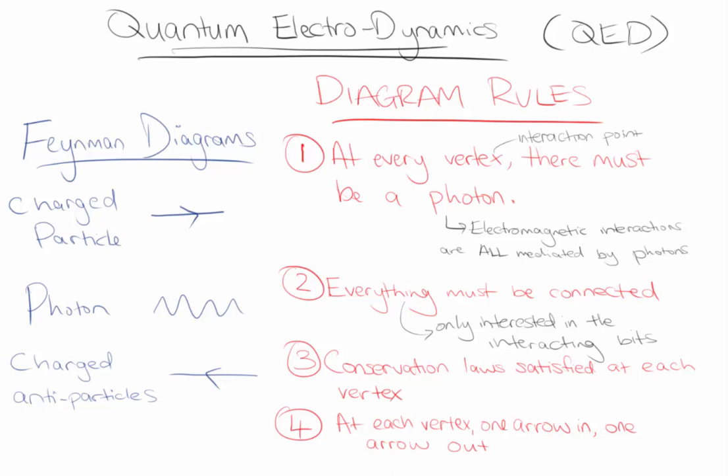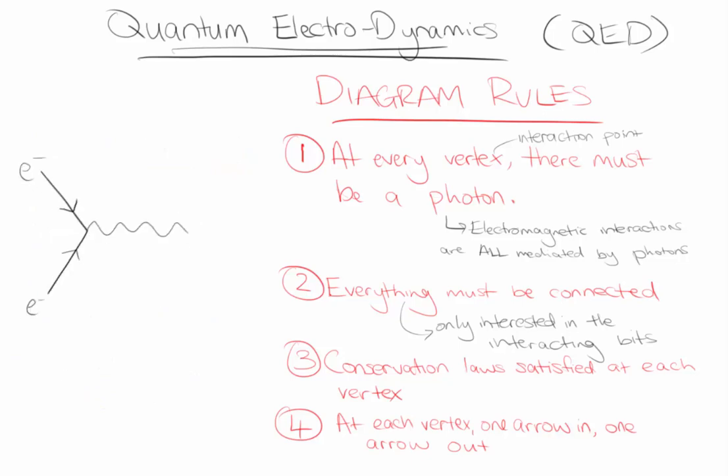To see this, let's draw a vertex where both arrows point inwards and check to see if charge is conserved. On the left-hand side, we have two electrons, each with a charge of negative one, so the total charge on the left-hand side of the vertex is negative two. On the right-hand side of the vertex, we have a photon which is neutrally charged, so has a charge of zero. Since two does not equal zero, this vertex is not allowed.